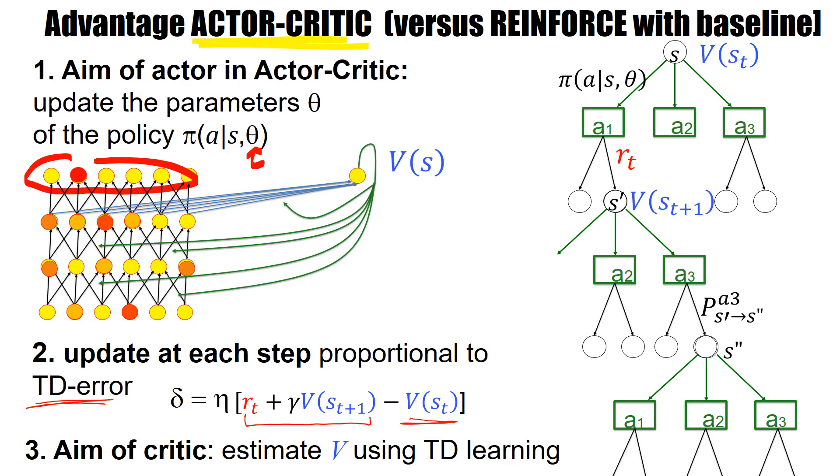And when I say value, the value is really what's calculated by the critic, by the second network. The aim of the critic is to estimate this V-value, and it does this using TD learning.